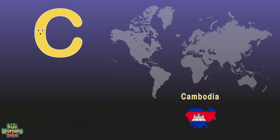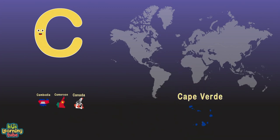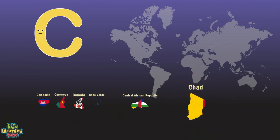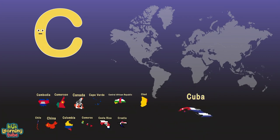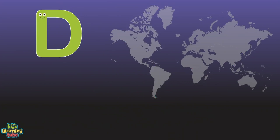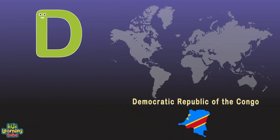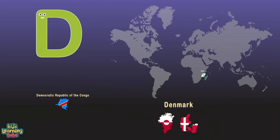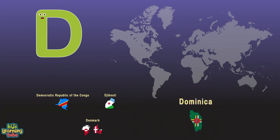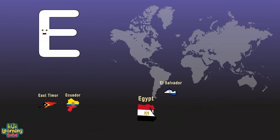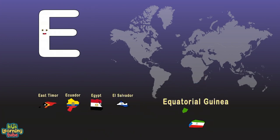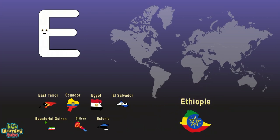C is for Cambodia, Cameroon, Canada, and Cape Verde. Central African Republic, Chad, and Chile. China, Colombia, Comoros, Costa Rica, Croatia, Cuba, Cyprus, and Czech Republic. D is for Democratic Republic of the Congo, Denmark, Djibouti, Dominica, and Dominican Republic. E is for East Timor, Ecuador, Egypt, and El Salvador. Equatorial Guinea, Eritrea, Estonia, Ethiopia.